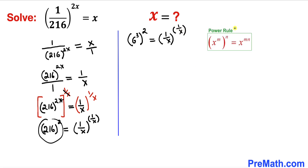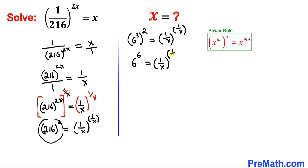Recalling the power rule of exponents once again, on the left-hand side we multiply 3 times 2 to get 6. So the left-hand side turns out to be 6^6 = (1/x)^(1/x).